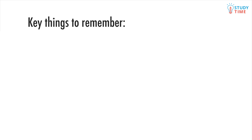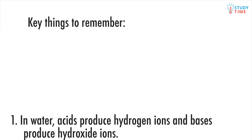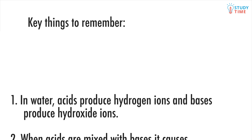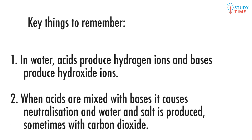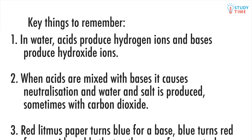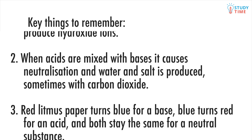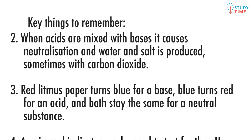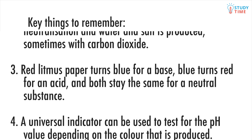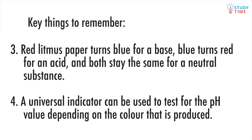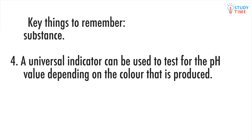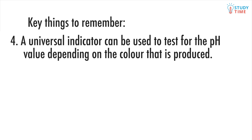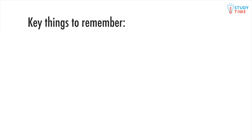There are some key things to remember. In water, acids produce hydrogen ions and bases produce hydroxide ions. When acids are mixed with bases, it causes neutralisation and water and salt are produced, sometimes with carbon dioxide. Red litmus paper turns blue for a base, blue turns red for an acid, and both stay the same for a neutral substance. A universal indicator can be used to test for the pH value depending on the colour that is produced.